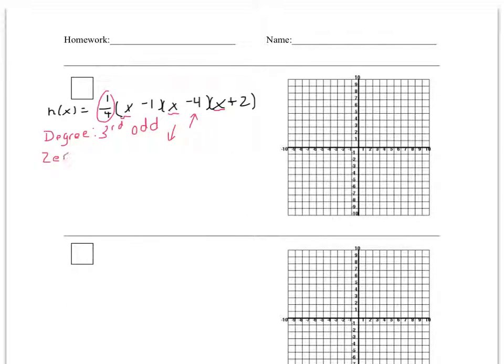Next we want to determine the zeros. Zeros are x-intercepts of the graph. We're going to set each factor equal to zero. If I set 1 fourth equal to zero, there's no variable, so I don't get an x-intercept for that.